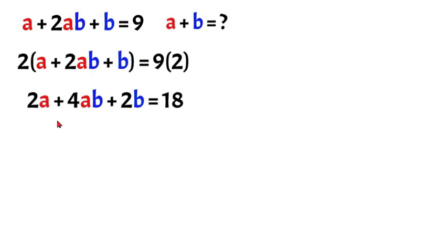Now over on this left portion we can factor out a 2a because that is common. So we can have 2a times 1 plus 2b plus 2b is equal to 18.